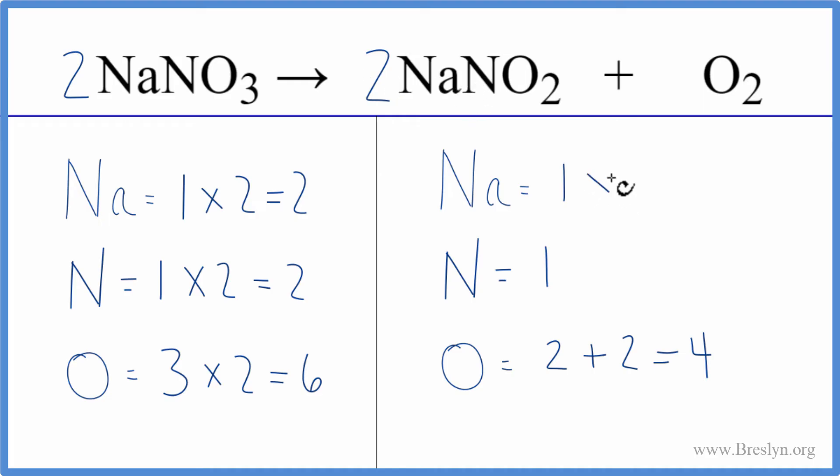We have one times two, that gives us two sodiums, those are balanced, one times two for the nitrogen, that'll give us two of those.